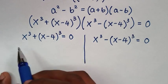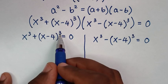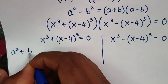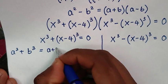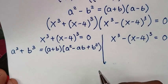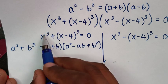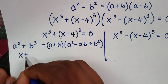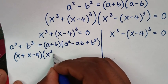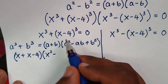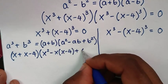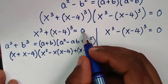From this first solution, x power 3 plus (x minus 4) power 3 is in the form of a sum of cubes. We apply the rule a cubed plus b cubed equals (a plus b)(a squared minus ab plus b squared). Applying this, it will be (x plus (x minus 4)) times (x squared minus x(x minus 4) plus (x minus 4) squared) is equal to 0.